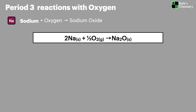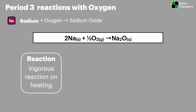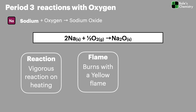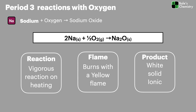First up, sodium reacts with oxygen to form sodium oxide. This is a really vigorous reaction and it burns with a yellow flame — similar to the colour of those old orange street lamps. The product is a white solid with a giant ionic structure.